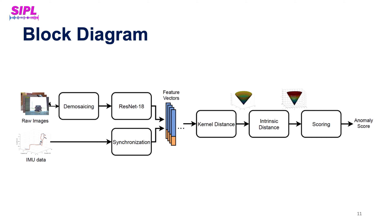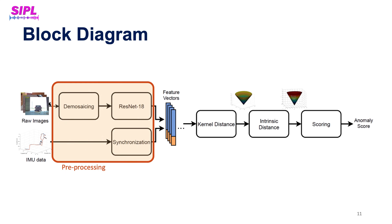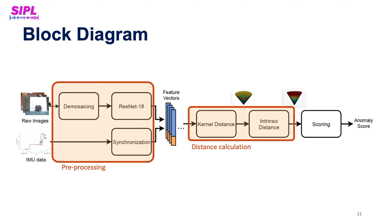In this slide we see a block diagram of our method. In the first stage, we pre-process the multimodal data to produce a multivariate time series. We extract features from the images using a pre-trained ResNet deep neural network and synchronize them with the IMU data. Then we calculate the distance metric discussed earlier and use it as a measure of abnormality. Finally, we can use essentially any scoring method to obtain an anomaly score.